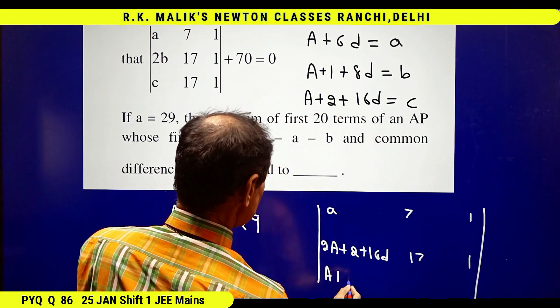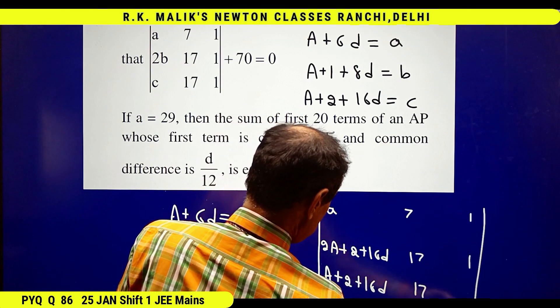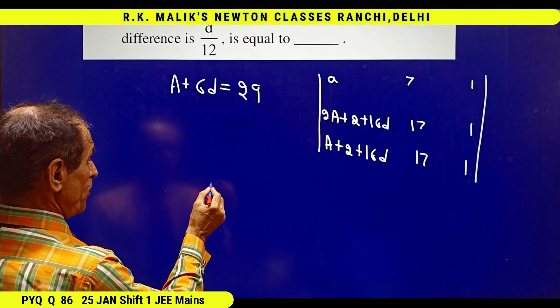Writing it as: a plus 2 plus 16d, 17, 1. Now use a property that C₂ changes to C₂ minus 17C₃.